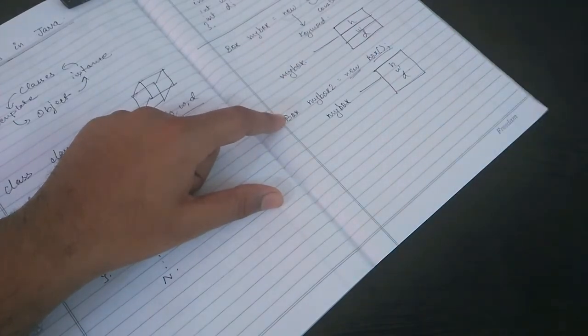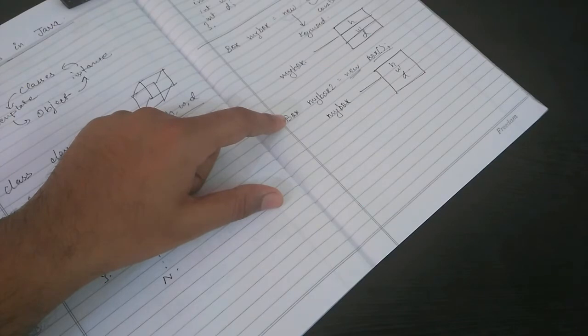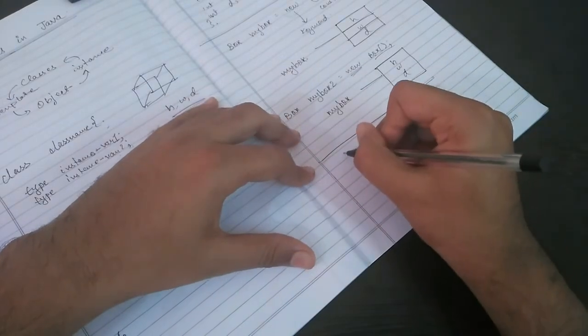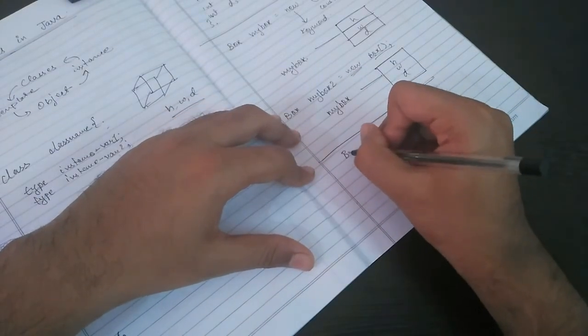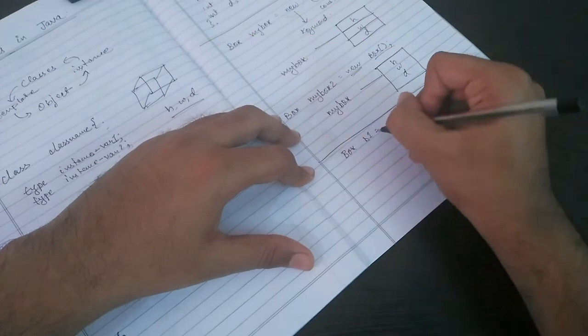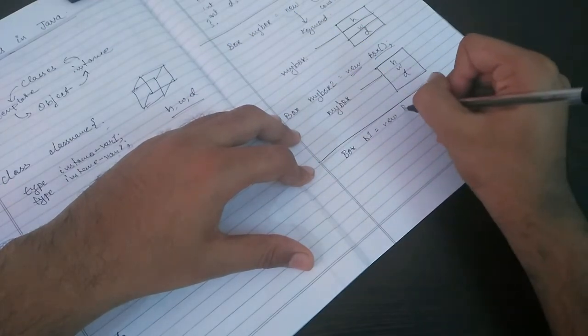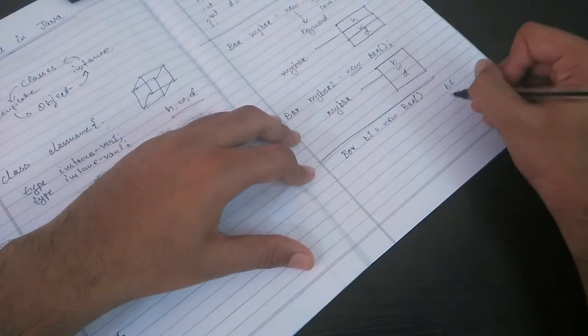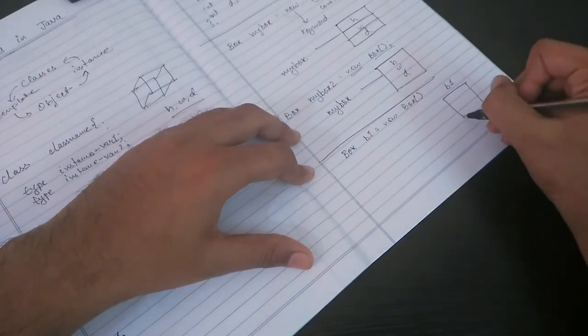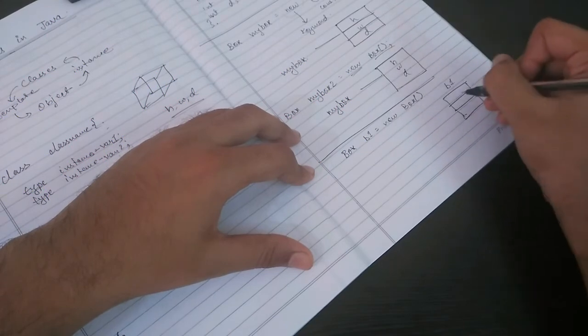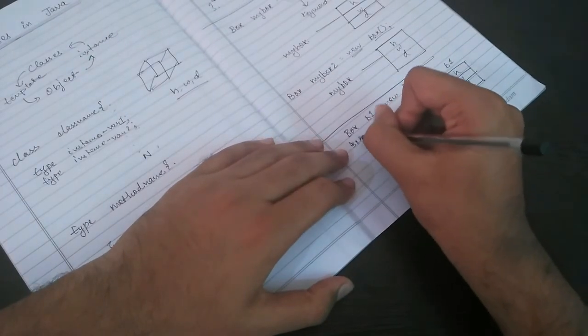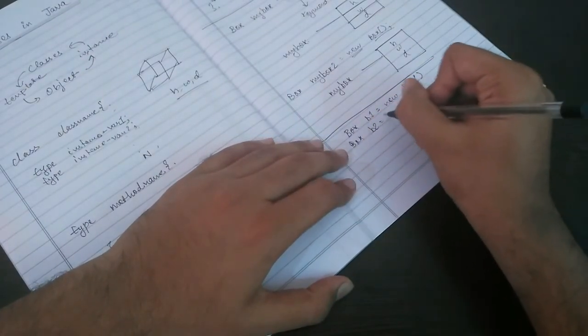Now what else we want to know about this is: suppose we create an object Box b1 equals new Box. Now what this will do is, for the object b1, it will allocate memory for h, w, d. Now suppose we write Box b2 equals b1.